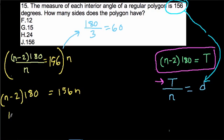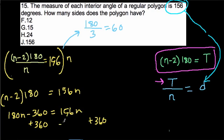Now, I distribute 180. So, I get 180N minus 360. Right? 180 times N is 180N minus 2 times 180. So, that was where the minus 360 came from. Equals 156N. Now, what I'm going to do is subtract 156 and add 360 to both sides. So, we add 360. And, we subtract 156N.